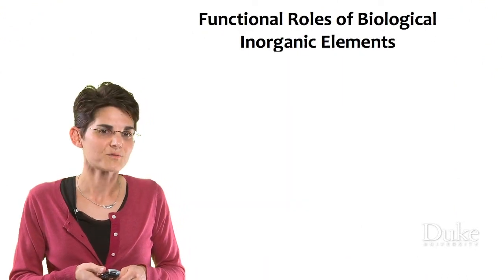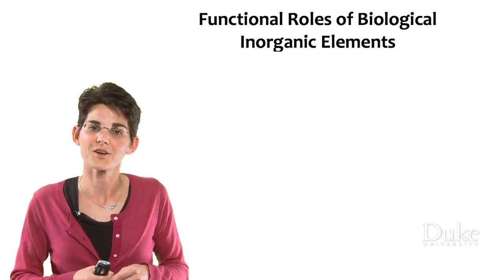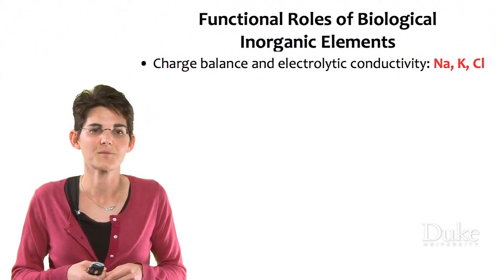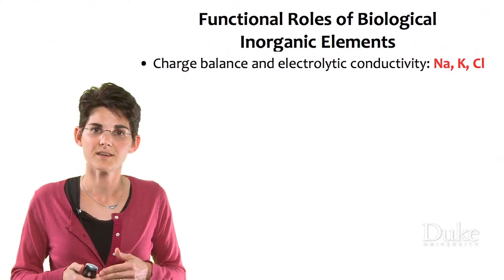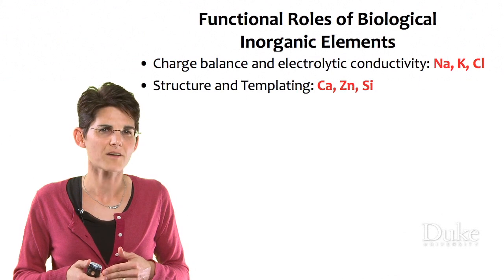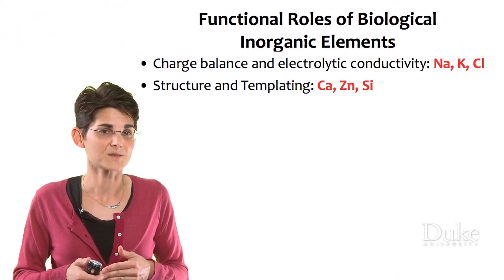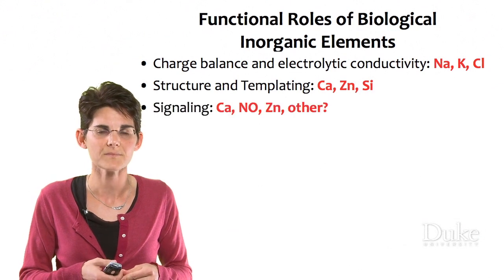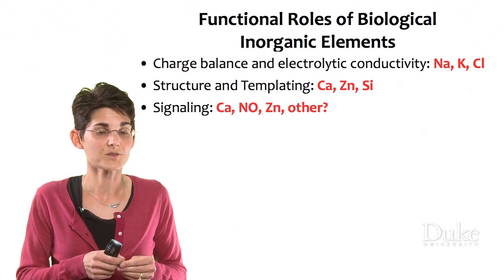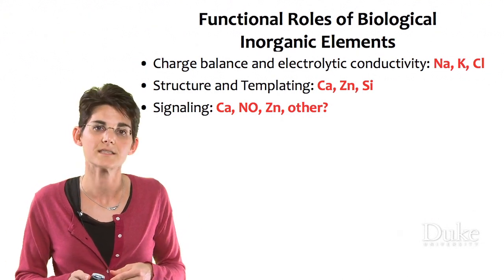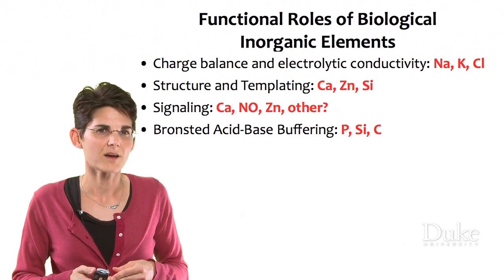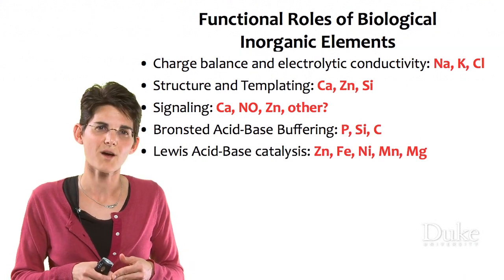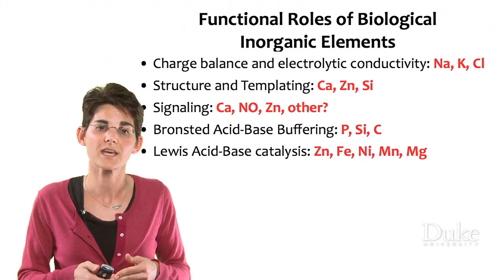So now we can summarize many of the functional roles for inorganic elements used in biology. We haven't looked at all of these, but hopefully you'll get a little appetite to start looking for more. One set of roles includes simple things like charge balance and electrolytic conductivity, structure and templating — things that hold other things together. Think about your bones made of calcium and phosphate as one example, but you can also see smaller examples in proteins where a metal cofactor helps with a structural feature. Also signaling molecules, like calcium or NO, that come on and off and cause some biological signal inside or between cells. And then there are things you'll hear about in general chemistry — Bronsted acid-base buffering or Lewis acid-base catalysis — so think about where in biology you might need those and what elements are used to carry out those processes.